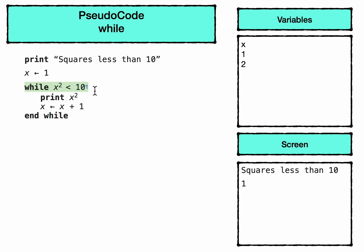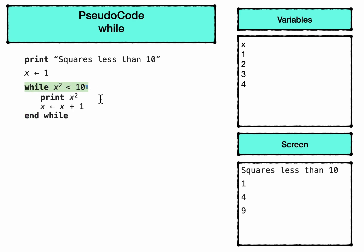Now x is worth two — two squared is four, still less than ten, so we print x squared which gives us four on the screen. Then we add one more to x so the current value of x is three. We jump back up to the top and check: three squared is nine, still less than ten, so we print three squared and then add one onto x so x is now four. When we jump back up and test whether four squared is less than ten, we get false. So the code between while and end while is ignored and the program continues from the bottom.